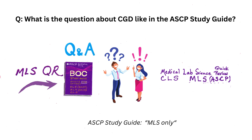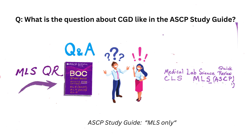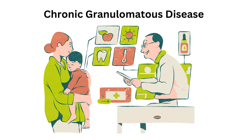There is one question in the AACP study guide that asks about this topic, stated for MLS only. Chronic granulomatous disease is actually a group of very rare genetic mutations that causes defective NADPH oxidase enzyme formation, leading to diminished superoxide, hydrogen peroxide, and hypochlorite formation needed for bacterial killing by our innate immune system phagocytes.